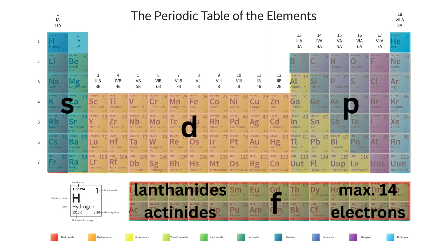Finally, the rare earth lanthanides and actinides are found in the F block at the bottom. Their outermost electrons are generally in F orbitals, which have a capacity of 14 electrons. Understanding orbital blocks allows you to predict how elements will behave — it unlocks their chemical properties.